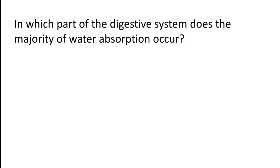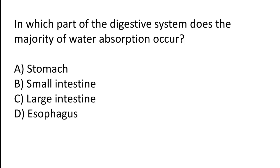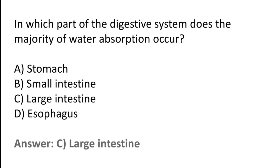In which part of the digestive system does the majority of water absorption occur? Option A: Stomach. Option B: Small intestine. Option C: Large intestine. Option D: Esophagus. The correct answer is Option C — the majority of water absorption occurs in the large intestine.